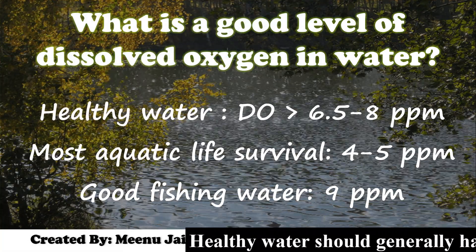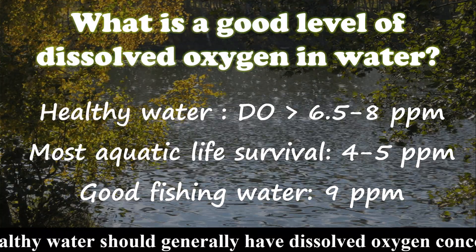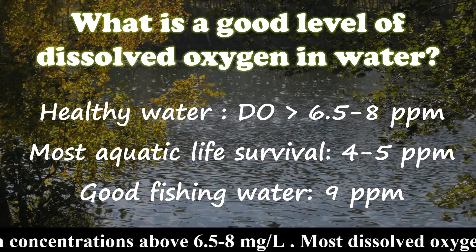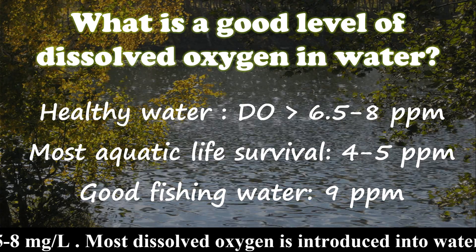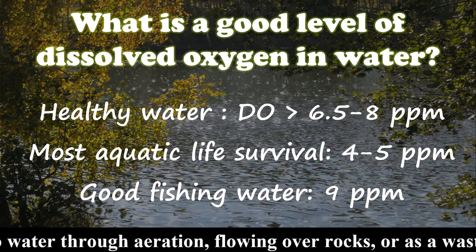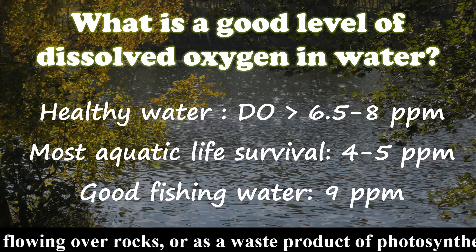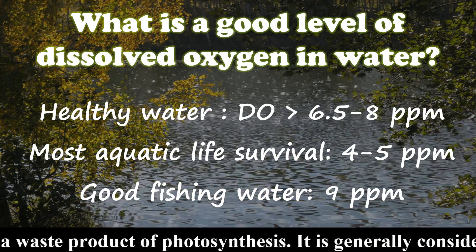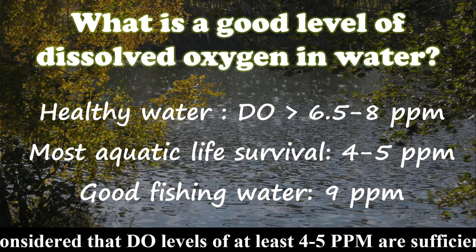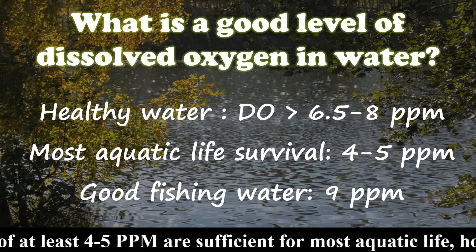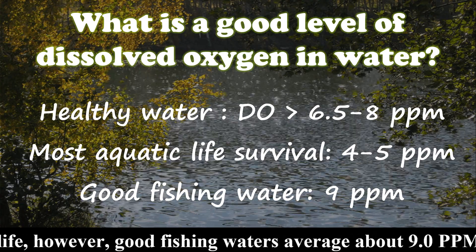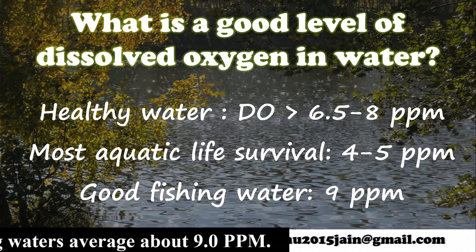Healthy water should generally have a dissolved oxygen concentration above 6.5 to 8 ppm. Most dissolved oxygen levels in water are sufficient due to aeration — flowing over rocks or as a byproduct of photosynthesis. It is generally considered that dissolved oxygen levels of at least 4 to 5 ppm are sufficient for most aquatic life. However, good fishing water averages about 9 ppm or 9 mg per litre.